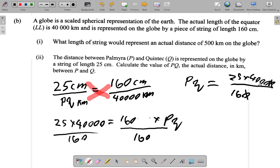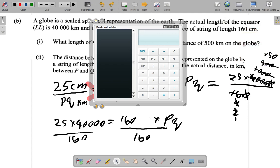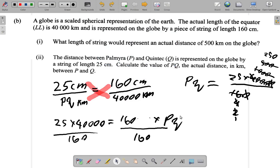This cancels down. 4 into 4,000 is 1,000, 4 into 16 is 4, 2 into 4 is 2, 2 into 1,000 is 500, 2 into 2 is 1, 2 into 500 is 250. And then 25 by 250—25 times 250 is 6,250.